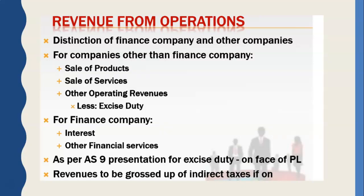The takeaway from this chapter is that financial statements provide information and convey the financial position of the company, and these statements are compulsory to be prepared under regulatory bodies. The expenses part of the P&L statement contains information on all expenses, and each expense can be studied with reference to notes. Depreciation and amortization is a way of spreading the cost of an asset over its useful life. Finance cost is the cost of interest and other charges paid when the company borrows money.